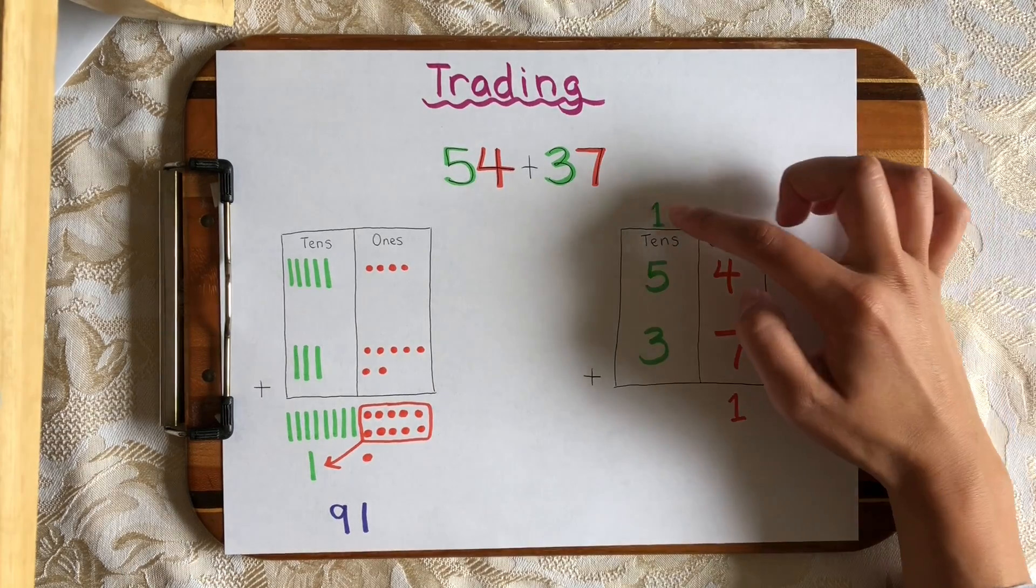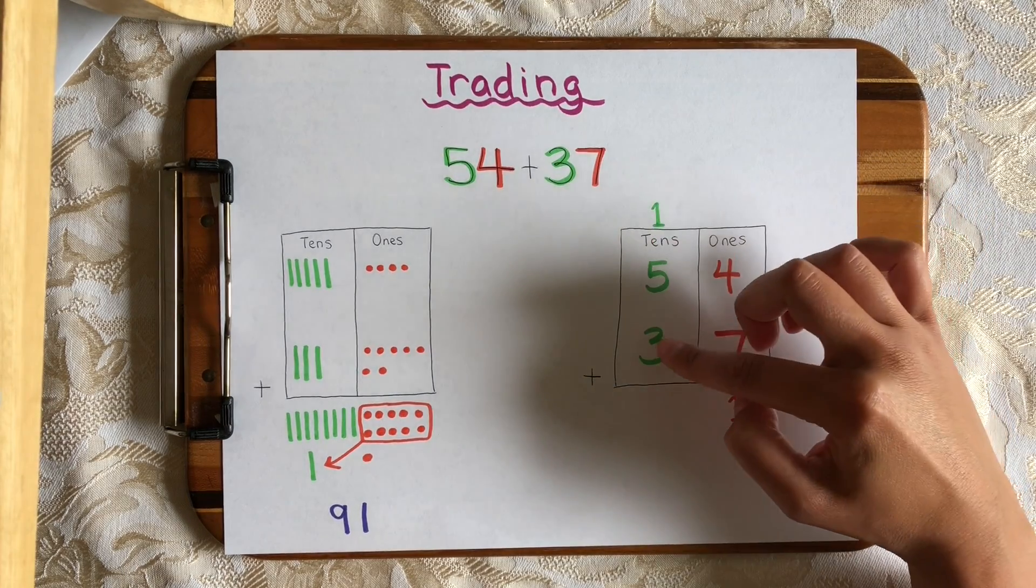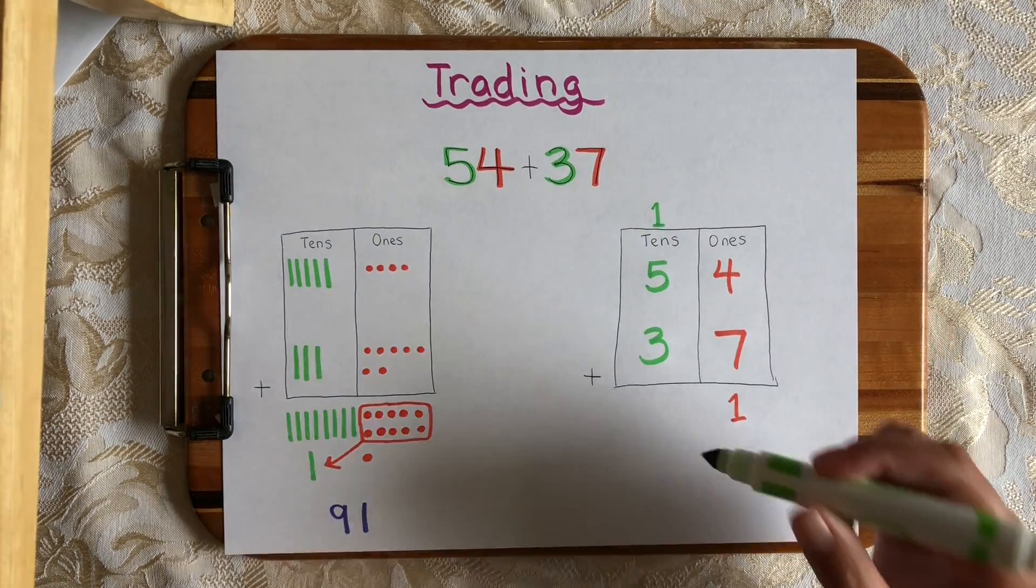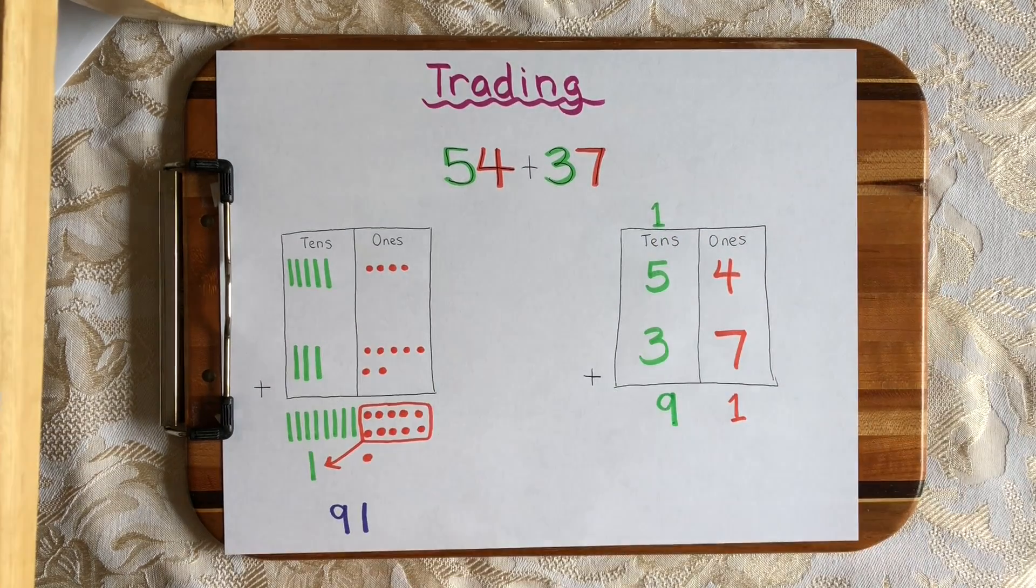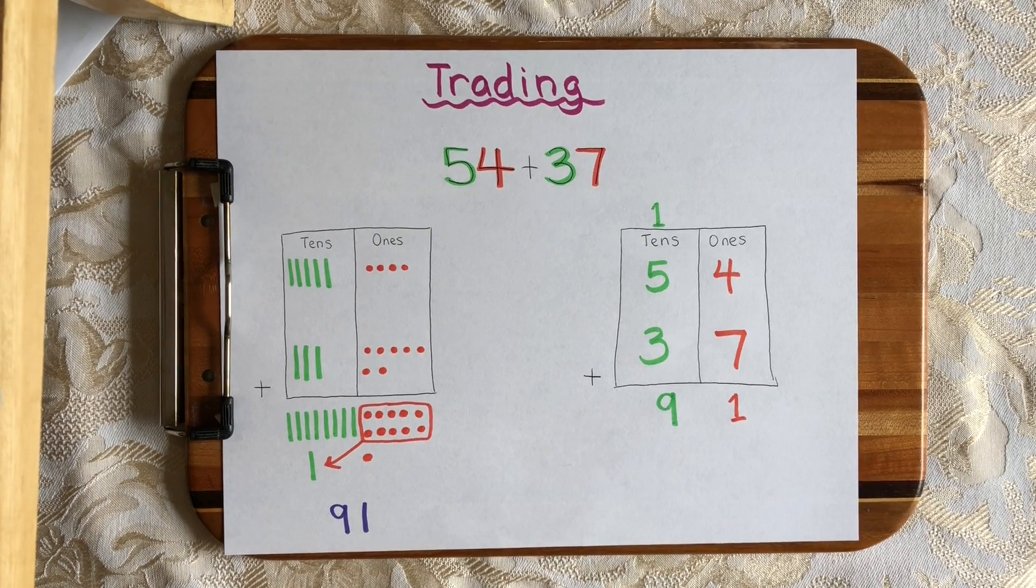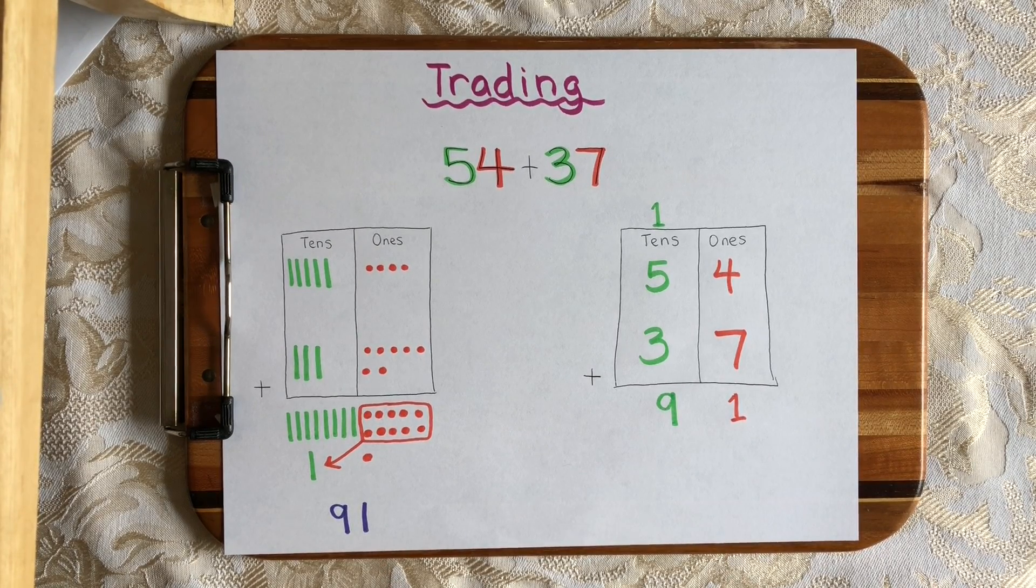Now let's add all the tens together. 1 plus 5 plus 3. 1 plus 5 is 6. 6 plus 3 is 9. And there's my sum 91, which is what I got over here when I drew it as well.